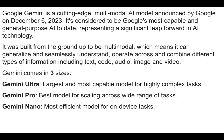Gemini comes in three varieties. Ultra — the largest and most capable, for highly complex tasks, suited for organizations like investment companies or NASA. Gemini Pro scales across a wide range of tasks — ideal for Fortune 500 and mid-level companies. And then there's Nano for on-device tasks, such as building an AI-powered app for a tablet or mobile device.